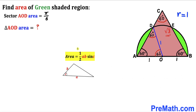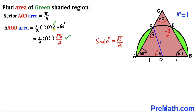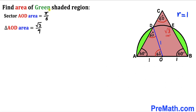Now we calculate the triangle AOD area using Area = ½ × a × b × sin(C). Both side lengths are 1 and the included angle is 60°, so: Area = ½ × 1 × 1 × sin(60°) = ½ × 1 × 1 × (√3/2) = √3/4. So sector AOD area = π/6 and triangle AOD area = √3/4.